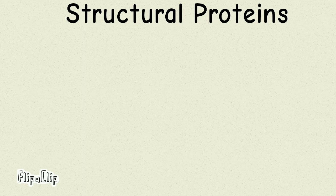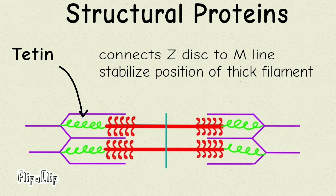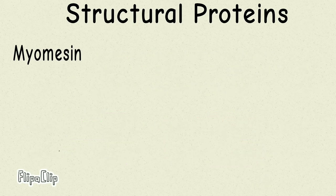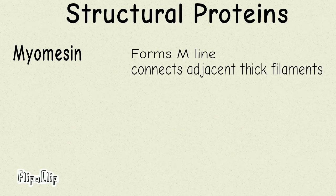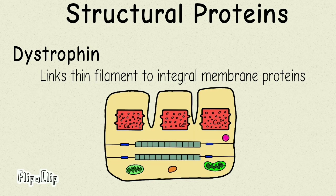The next class is structural proteins, which form and maintain the entire structure of the muscle fiber. The first structural protein is titin. Titin connects the Z-disc to the M-line, essentially holding the thick filament in place. It is very elastic and expandable as the muscle contracts. The second is myomesin, which forms the M-line. The M-line connects adjacent thick filaments to each other and also binds to the titin filament.